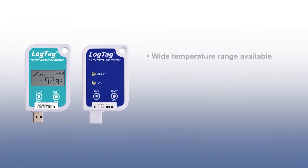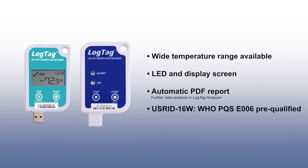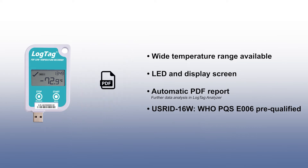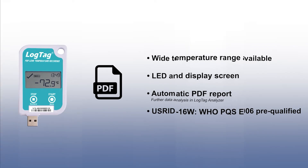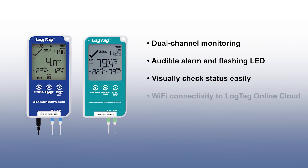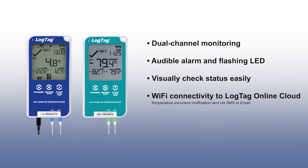Like the 3-pin models, the USB range offers a variety of LED display options and temperature ranges. When inserted into a computer, the logger will automatically generate a PDF report with no additional accessories or software. The dual channel range offers the capability of monitoring two temperatures at once with an auto channel swap function.